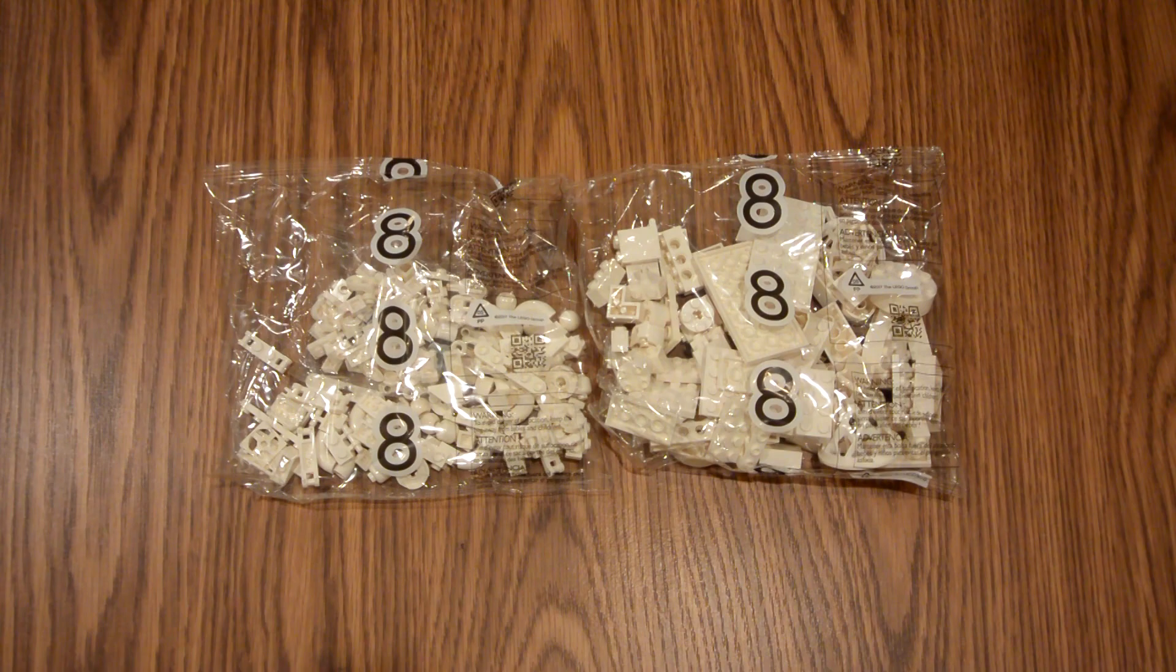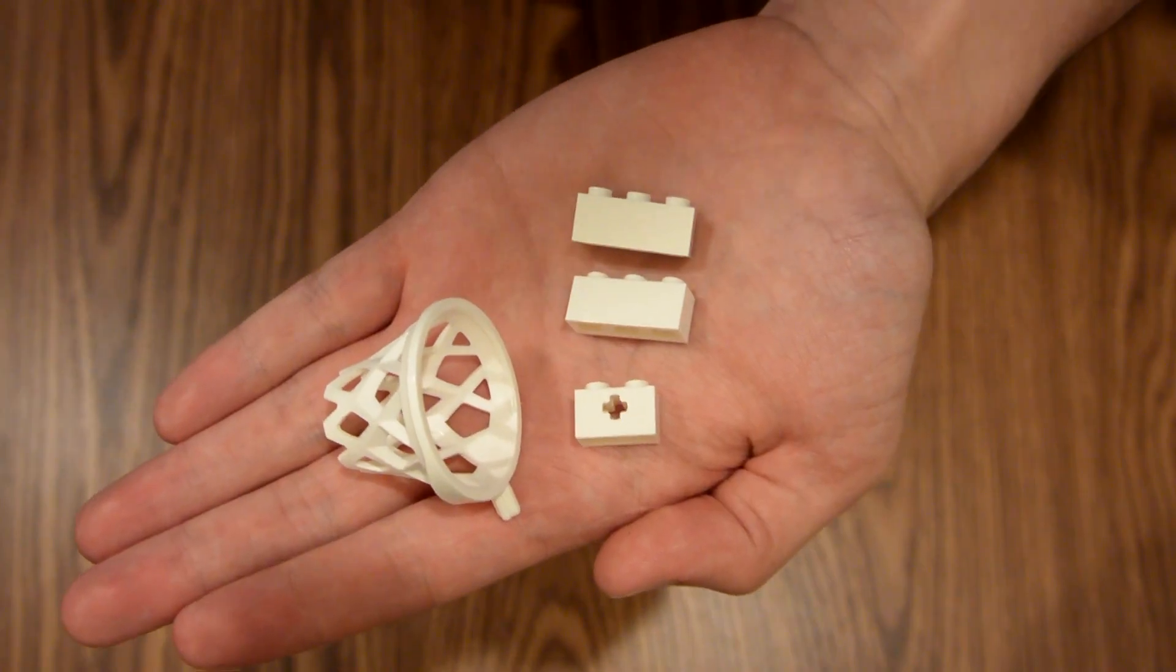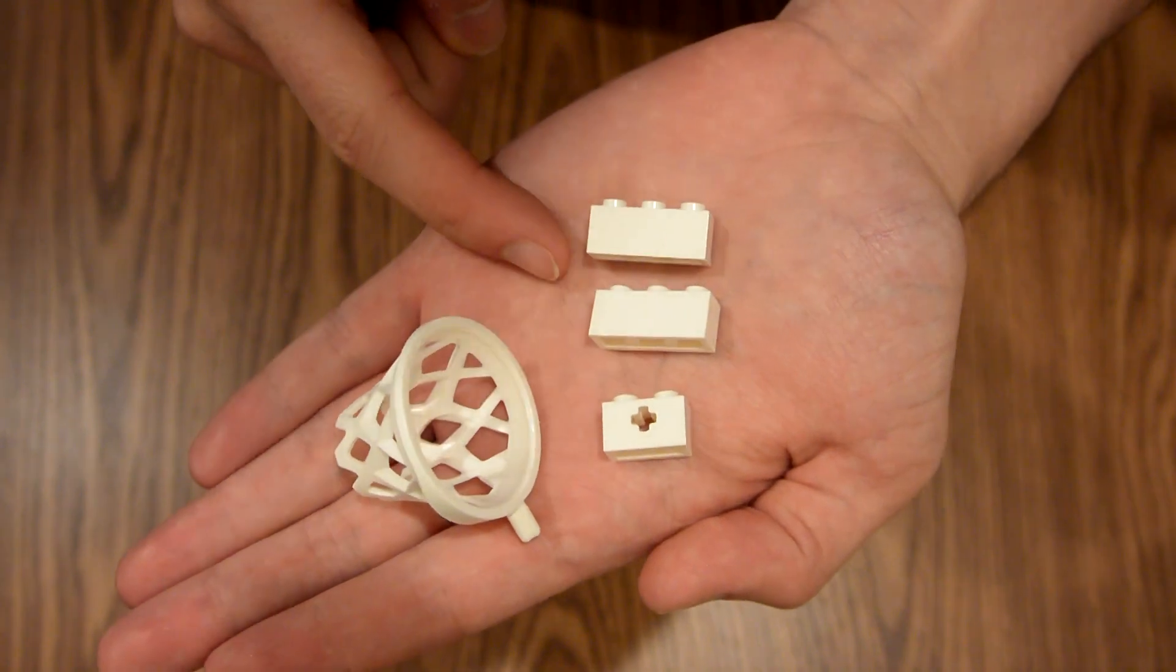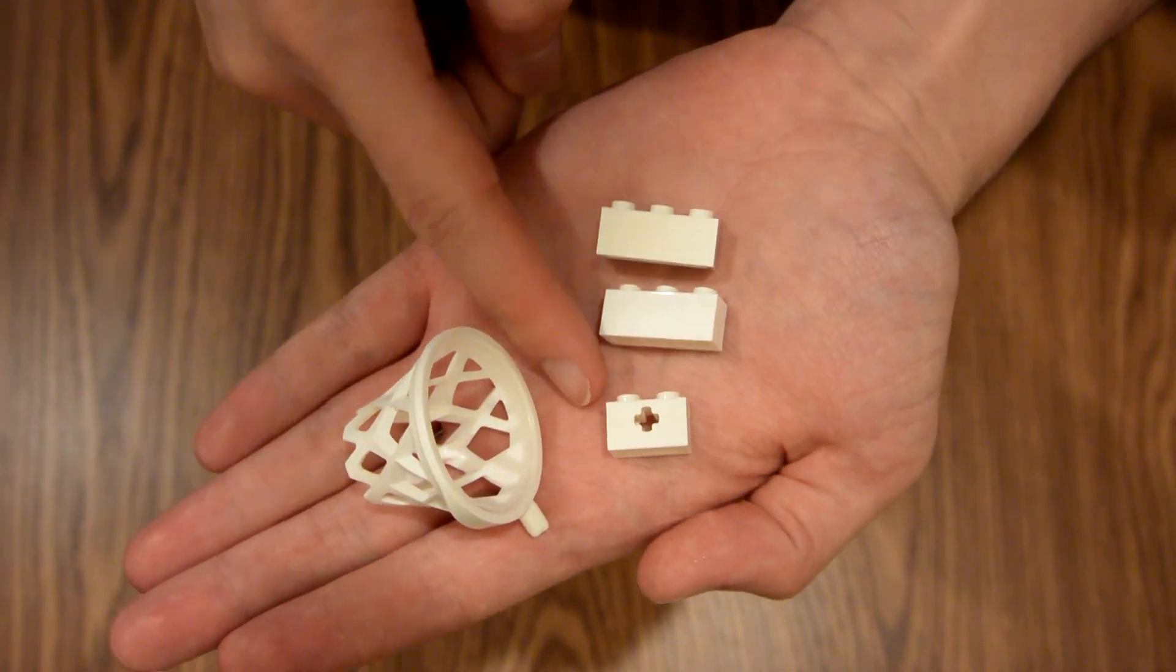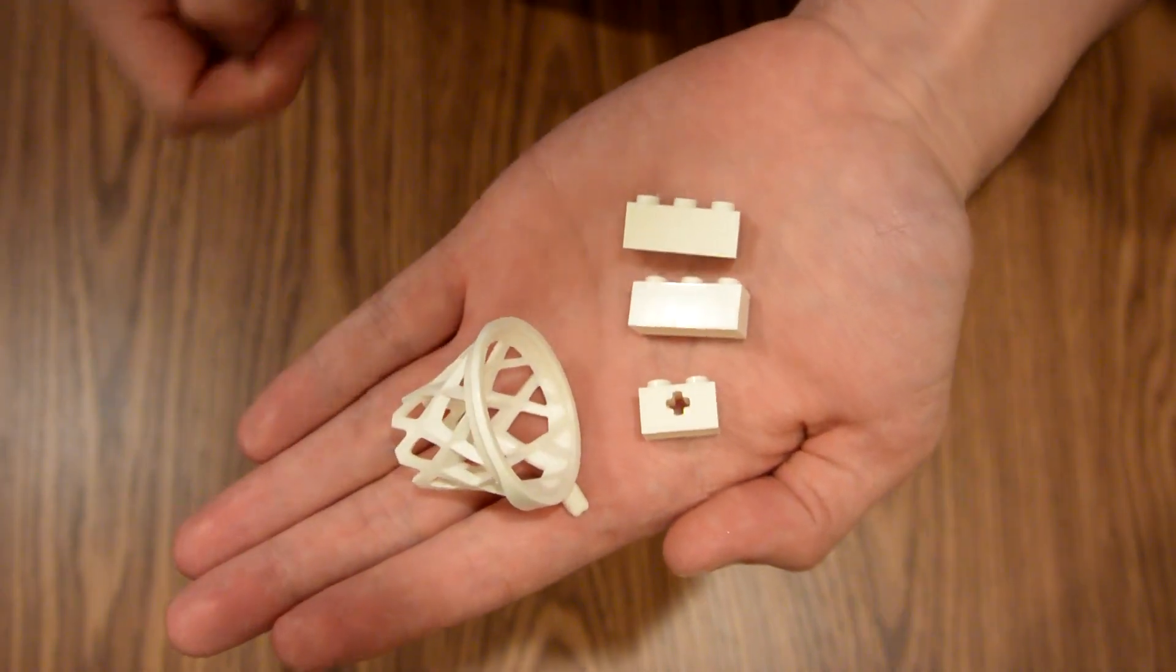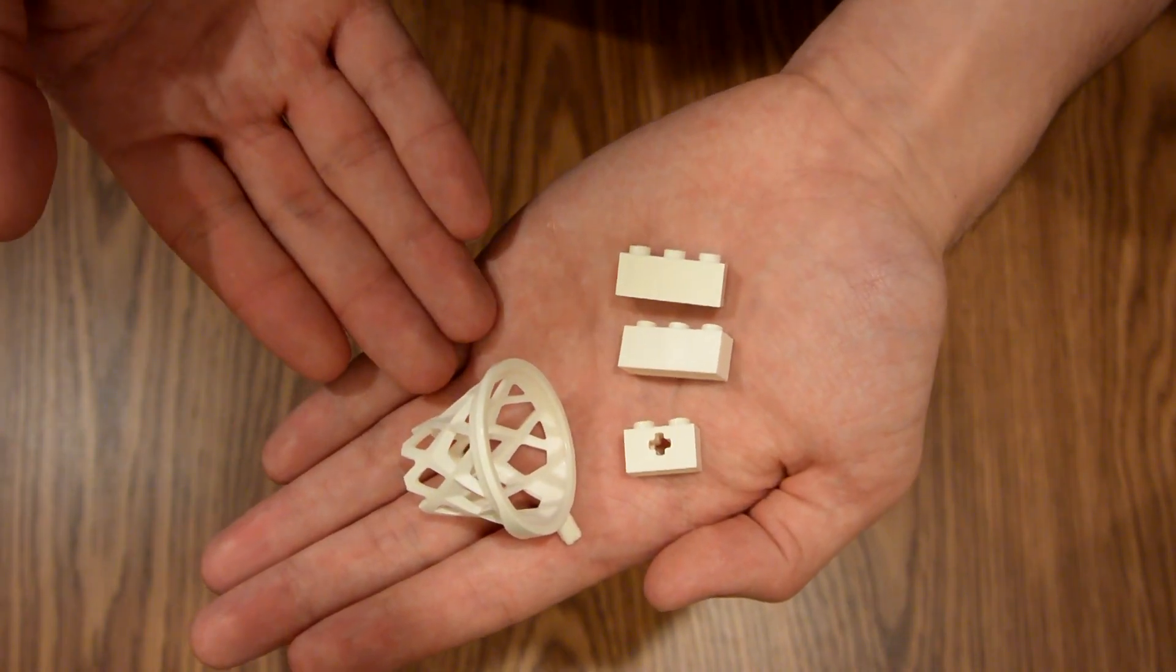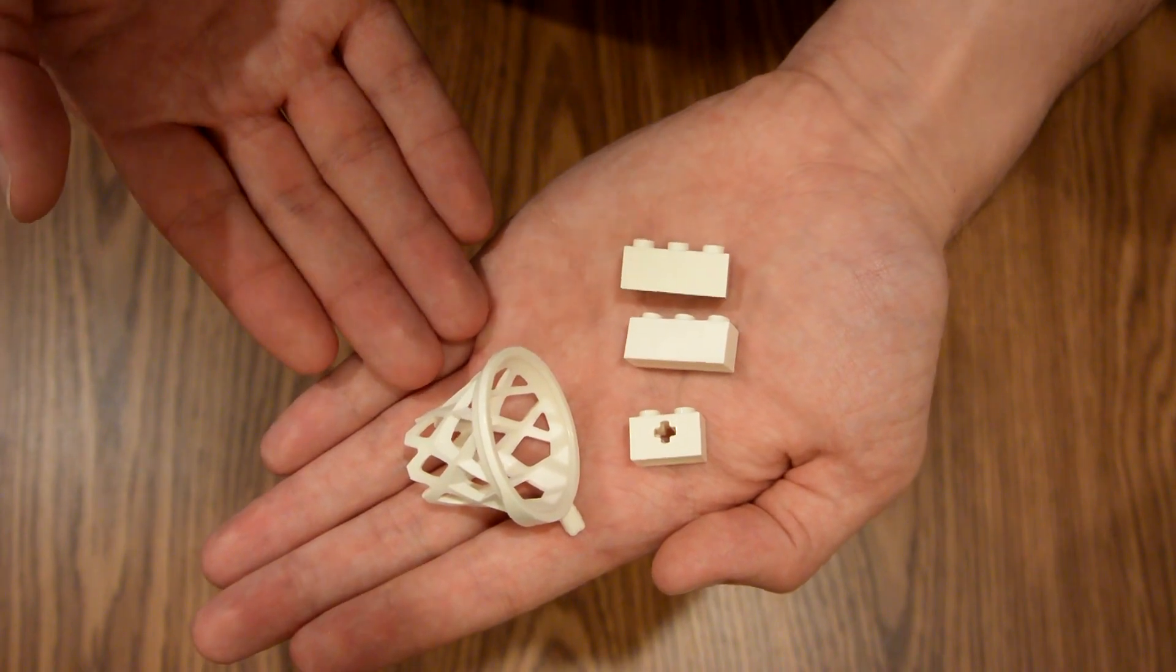Now I will build my own model to show you an example. Here are the four pieces that I am going to use: two 3x1 bricks, one 2x1 brick with an axle hole, and this little basketball hoop thing. The only reason I chose these pieces is because I like sports, and here we have a basketball hoop that represents my like for sports.